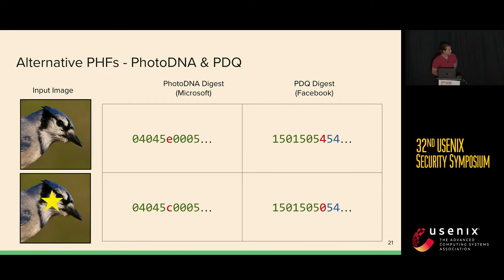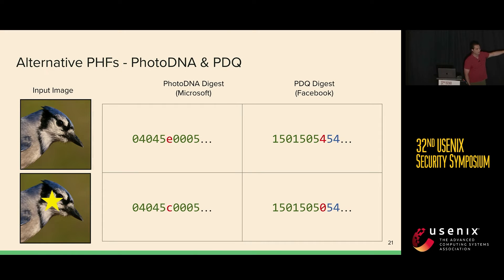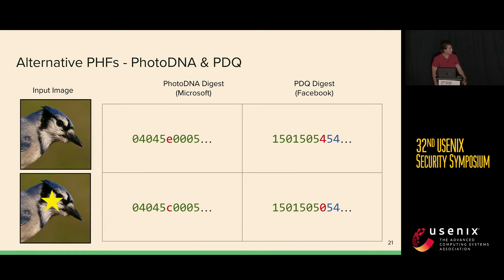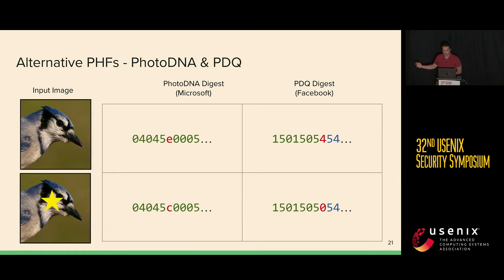Just to highlight what these algorithms do: they're designed to capture image semantics, so if we take an image and put a little yellow star on top of it, the two digests remain largely the same between these two images for each of these respective algorithms. The question remains: if NeuralHash is broken so easily, can we employ similar techniques to break these algorithms as well? NeuralHash was fully differentiable, so there are a few things we have to do to get those gradients back from these algorithms, which I'll discuss in our attack.